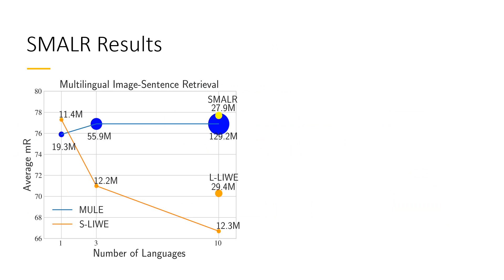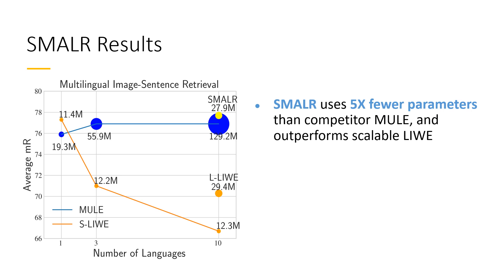Let's see how well SMALLER works on our 10-language corpus. We see that SMALLER uses five times fewer parameters than MULE while performing at a similar level. At the same time, SMALLER outperforms the S-Laiwi scalable model while using a similar number of parameters. To summarize, with both MULE and SMALLER, we've shown that we can scale image sentence retrieval models to many languages without sacrificing performance, while keeping the overall number of parameters relatively low.